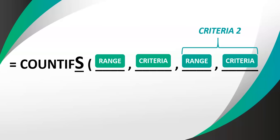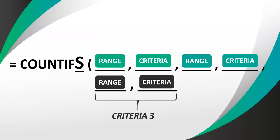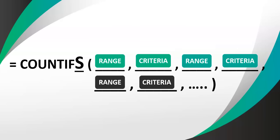For example, in the first criteria you might look for all the males, and then the second criteria looks for all the marks above 50 — so you're counting all males with above 50. If there are only two criteria, you close the bracket. What's nice about COUNTIFS is it doesn't just work with two criteria; you can have three, four, or more. Just add a comma and another range-criteria pair for each additional criteria.